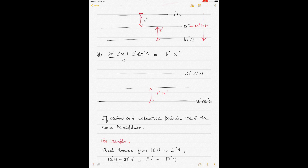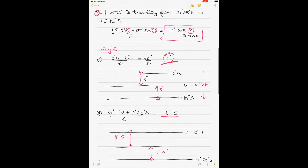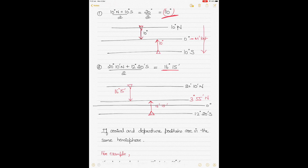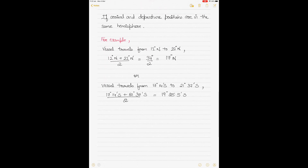Applying method 2 to the second example — vessel traveling from 20 degrees 10 minutes north to 12 degrees 20 minutes south — add the two and divide by 2 to get 16 degrees 15 minutes. You can either go up from 12 degrees 20 minutes south by 16 degrees 15 minutes, or come down from 20 degrees 10 minutes north by 16 degrees 15 minutes. In both cases you arrive at 3 degrees 55 minutes north — the same answer as method 1.